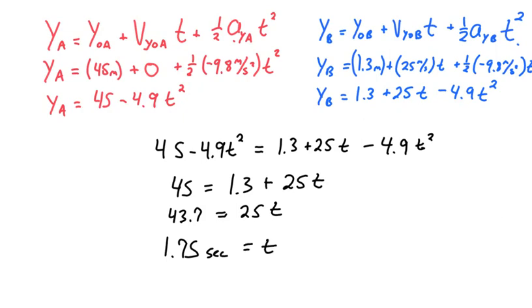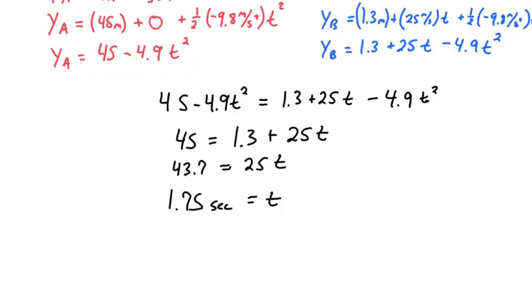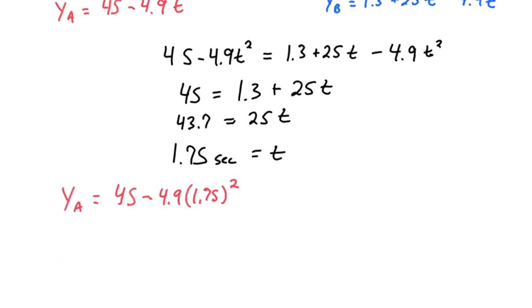Now that tells us how much time passes before they cross paths, but not where they cross paths. So my last step, I need to go back to either this equation or this equation and plug in my time to figure out what the Y position was. Since the Y position is the same for the red and for the blue, it doesn't matter which one I use. So I'll use the one that has fewer terms in it. So now I can write that as YA or YB or just Y is equal to 45 minus 4.9 times 1.75 and that gets squared. And so our final answer on this one is that these two balls are going to cross paths when they're at 30 meters off the ground.